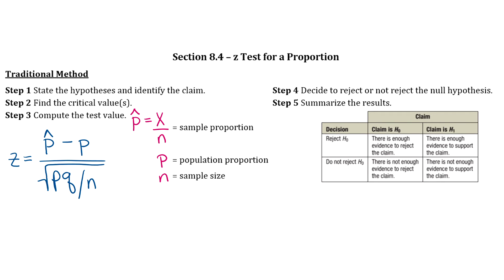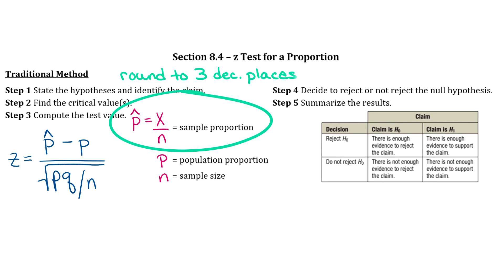As far as rounding, the one thing you have to watch out for in this section is your p-hat. In Connect Math, you have to round your value to three decimal places. If you round to two or four and then continue on the problem, it's going to throw your final answer off and you're going to be really frustrated, so just keep that in mind.